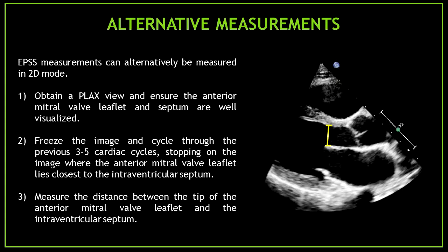Did you know that you could use an alternative measurement? The E-point septal separation is traditionally measured with M-mode, but can alternatively be measured on 2D-mode. Three simple steps: Number one: obtain a parasternal long axis view and ensure the anterior mitral valve leaflet and septum are well visualized. Number two: freeze the image and cycle through the previous three to five cardiac cycles, stopping on the image where the anterior mitral valve leaflet lies closest to the interventricular septum. Number three: measure the distance between the tip of the anterior mitral valve leaflet and the interventricular septum, as you would on M-mode.